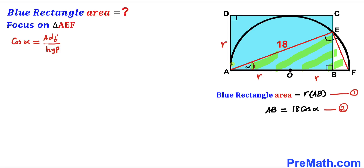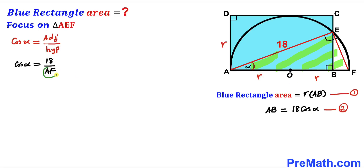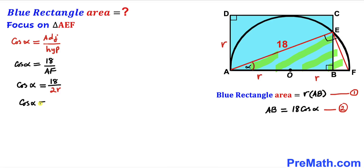Focusing on right triangle AEF, cosine of angle alpha equals adjacent divided by hypotenuse. In this triangle the adjacent side is 18 and the hypotenuse is AF. So cosine of alpha equals 18 divided by AF. We observe that AF equals r plus r, which is 2r. Substituting, cosine of alpha equals 18 divided by 2r, which simplifies to 9 divided by r.